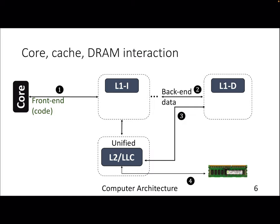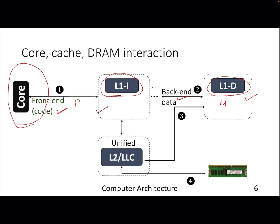Here is a high-level view of how the core interacts with the cache or memory. In the fetch stage of the processor pipeline, we demand for instructions from the L1 instruction cache — this is the front end of the processor. We then move through the pipeline, and finally in the memory stage we demand for data — that's known as the back end. For data there is a different structure and for instructions a different structure, similar to the concept in a five-stage pipeline where we have separate instruction memory and data memory.